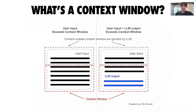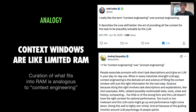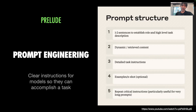A context window is the maximum amount of text, measured in tokens, that an AI model can remember and use during a conversation when it's generating a response. When that limit is reached, the earliest information begins to fade as new information comes in, and that can impact the model's ability to refer back to earlier parts of the conversation. As Andrej Karpathy says, LLMs are like the new OS — the model is the CPU, and the context window is limited RAM that you need to engineer carefully.